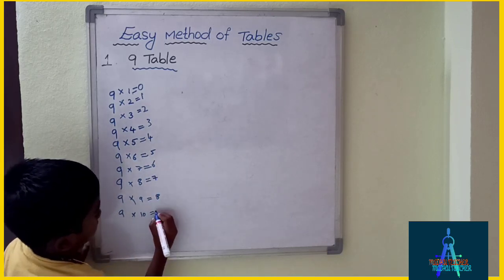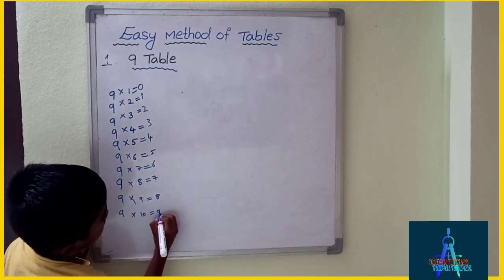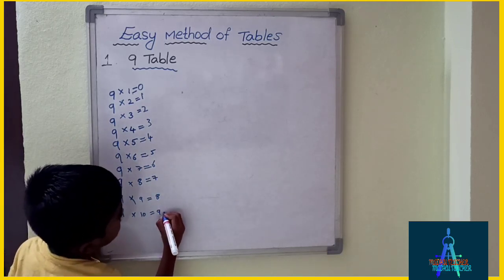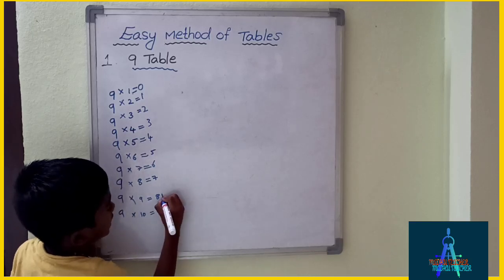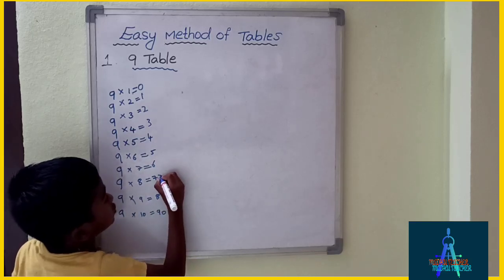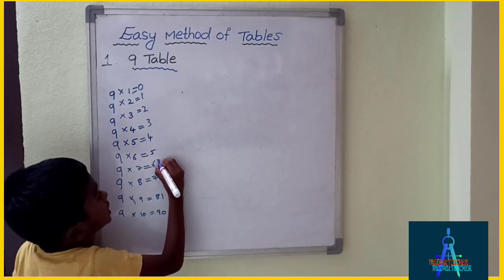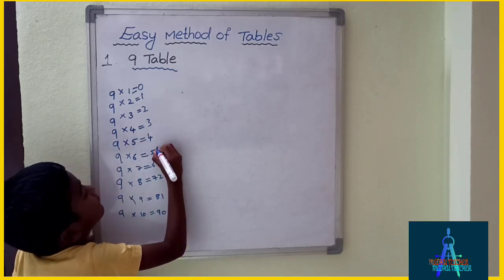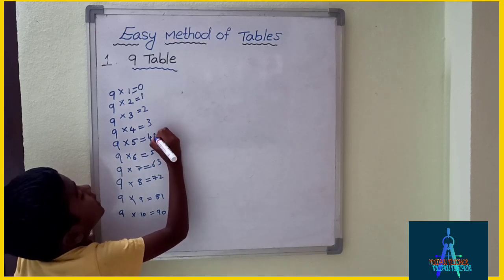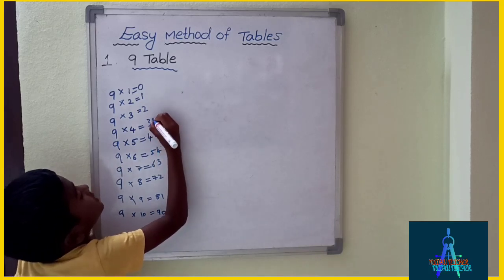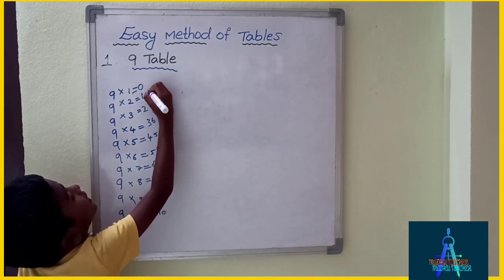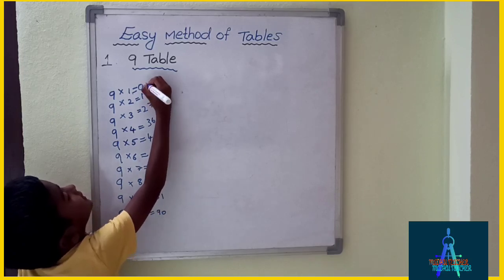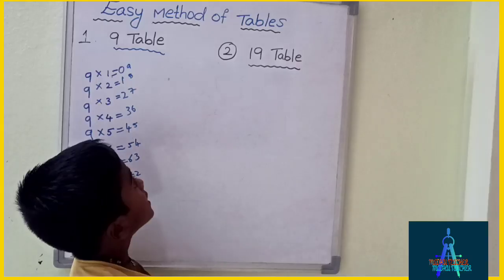And then write 9, and on the right side write 0, 1, 2, 3, 4, 5, 6, 7, 8, 9 going upward.